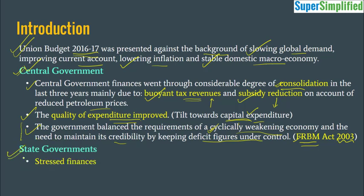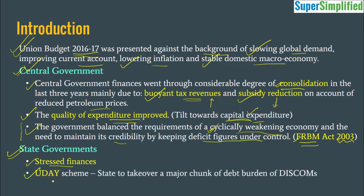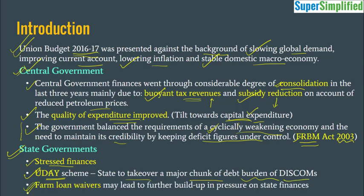Turning to state governments, state government finances are stressed, as we also saw in Chapter 1. This is mainly due to the UDAY scheme (Ujwal DISCOM Assurance Yojana), under which states had to take over the major chunk of the debt burden of power distribution companies. Another factor coming up is farm loan waivers, which will further overburden state finances.